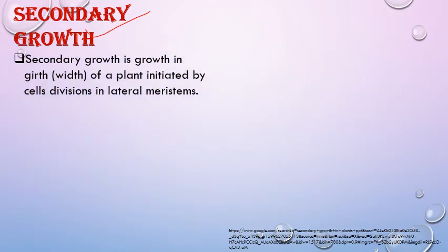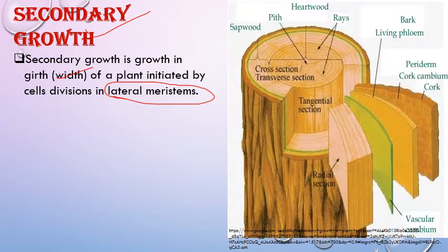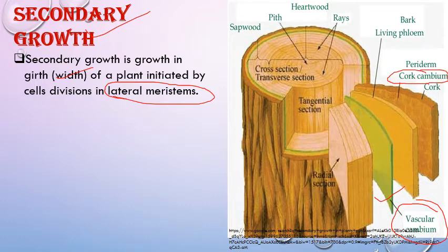Secondary growth is growth in diameter, girth, or width of a plant, which is initiated by cell division in lateral meristems — for example, vascular cambium and cork cambium. In the stem, we have two types of cambium: vascular cambium, represented by the yellowish-green patch, and cork cambium. Cork cambium is responsible for formation of periderm, while secondary xylem and secondary phloem are formed by vascular cambium.